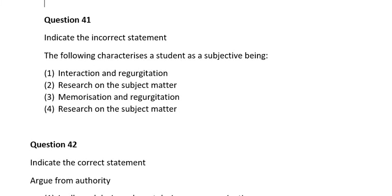Question forty-one. Indicate the incorrect statement. The following characterizes a student as a subjective being: number one, interaction and direct mutation; number two, research on the subject matter; number three, memorization and direct mutation; number four, research on the subject matter. The correct answer is number three: memorization and direct mutation.